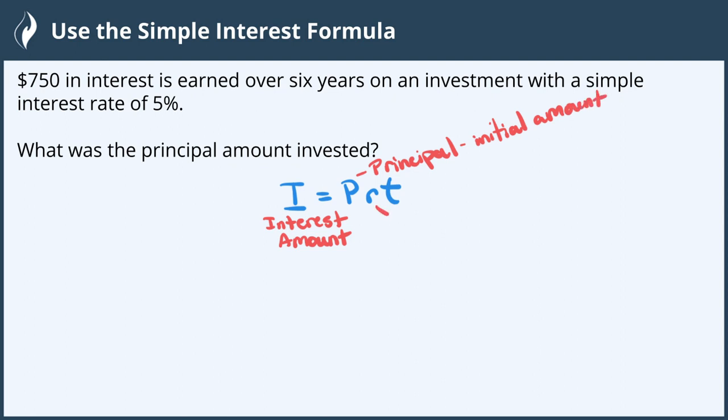R is the interest rate, and T is time measured in years.